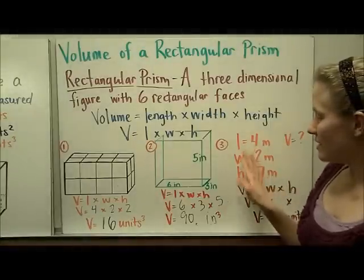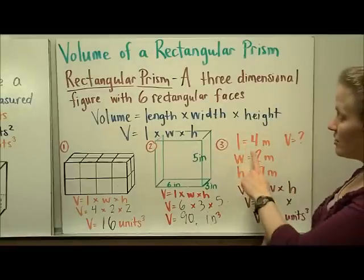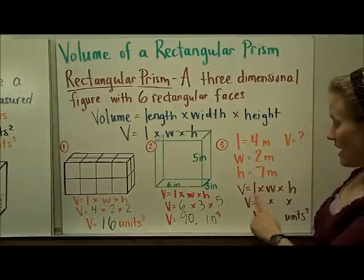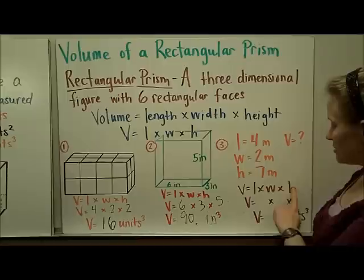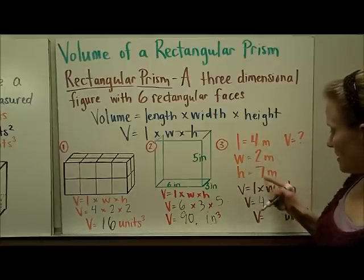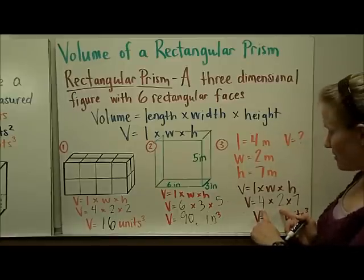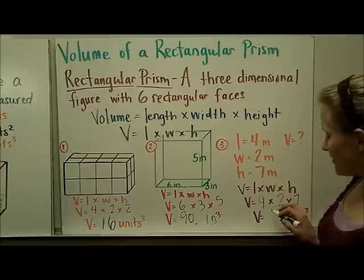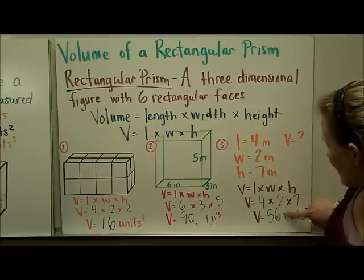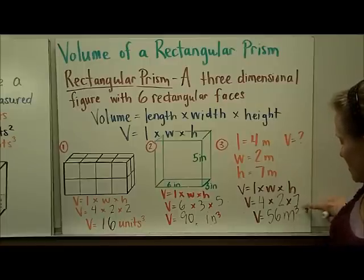Finally, you might be given some dimensions and not given a figure to model it. You're told here that the length is 4 meters, the width is 2 meters, and the height is 7 meters. I can write the formula and then replace each of those dimensions. The length is 4 meters, the width is 2 meters, and the height is 7 meters. So I can do 4 times 2, which is 8, times 7. 8 times 7 is 56. The volume of this rectangular prism would be 56 meters cubed.